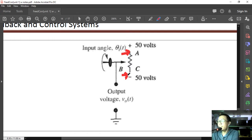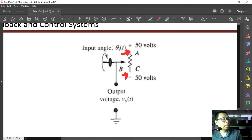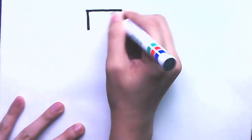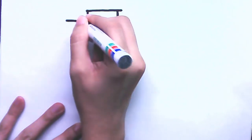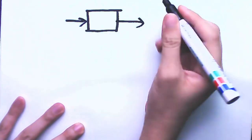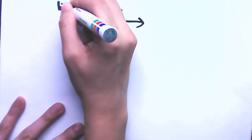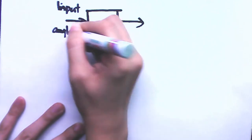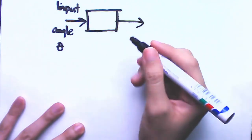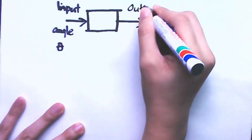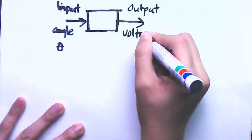We can say that our block diagram would actually look something like this. This is the potentiometer block. The input is the angle — input angle — and the output is the output voltage, V_O. Those are our input and output.